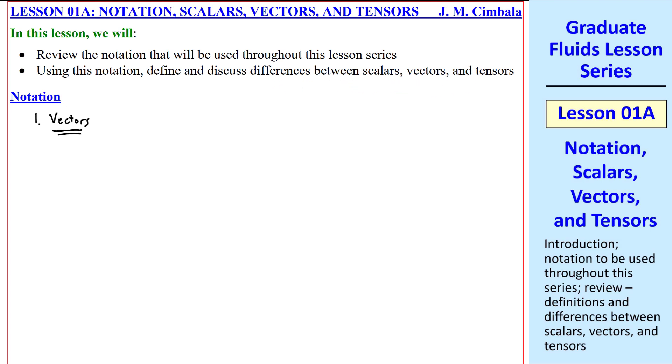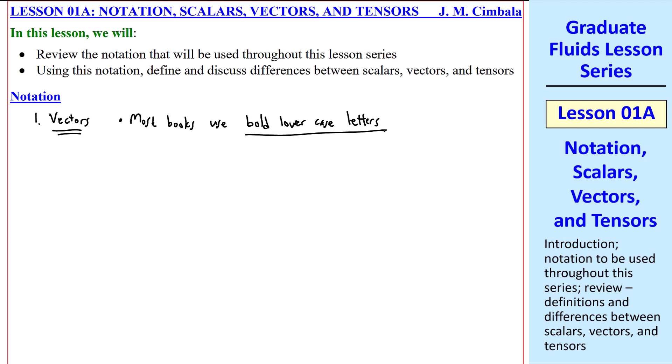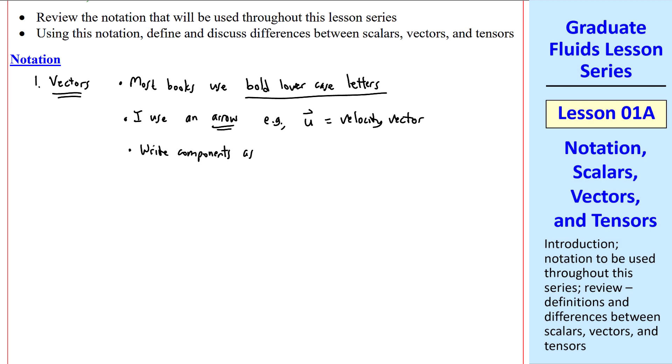Let's talk about the notation for vectors. Most books use bold lowercase letters to indicate a vector. I use an arrow. For example, u with an arrow on the top is the velocity vector. We're used to writing the components as uvw in an xyz Cartesian coordinate system. However, in this lesson series, get used to instead components u1, u2, and u3 in the x1, x2, x3 coordinate system. This is our position vector, and this is the velocity vector.